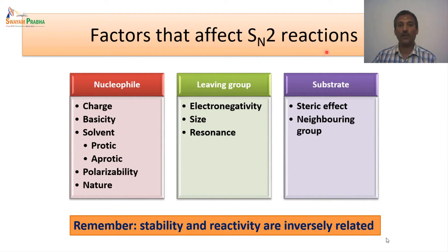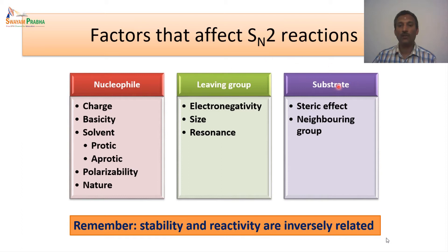Now let us look at various factors that affect the SN2 reactions. We have three major components: one is the nucleophile, another one is the leaving group, and another one is the substrate. The leaving group is actually present in the substrate. When we talk about substrate, it is basically the steric effect under the neighboring groups. Because the leaving group ability is very, very crucial for the reaction to occur, we are studying about this separately. And of course, nucleophile is a separate entity, so we have to look at what are all the different factors that affect the nucleophile.